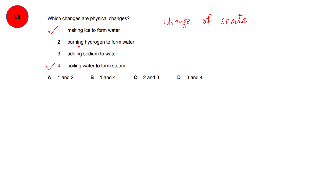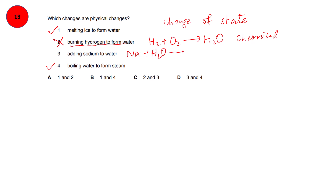Looking at statement 2, it talks about burning hydrogen to form water. In this reaction, hydrogen reacts with oxygen and a new substance is produced, so this is a chemical change, not a physical change. Adding sodium to water: when sodium is added to water, it reacts vigorously to produce sodium hydroxide and hydrogen gas, so this is again a chemical change. The correct response is option B, statements 1 and 4.